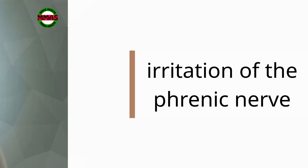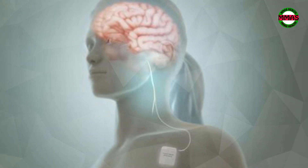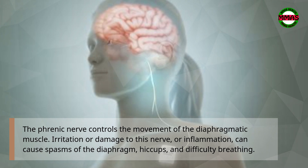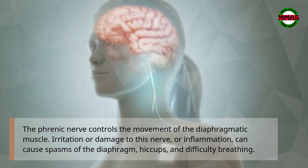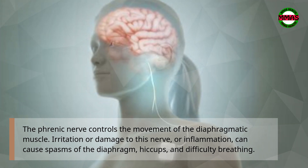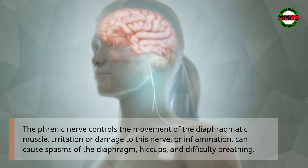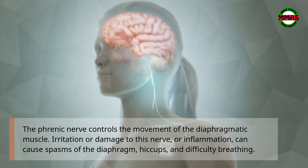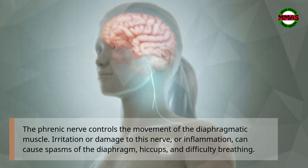Irritation of the phrenic nerve: The phrenic nerve controls the movement of the diaphragmatic muscle. Irritation or damage to this nerve, or inflammation, can cause spasms of the diaphragm, hiccups, and difficulty breathing.